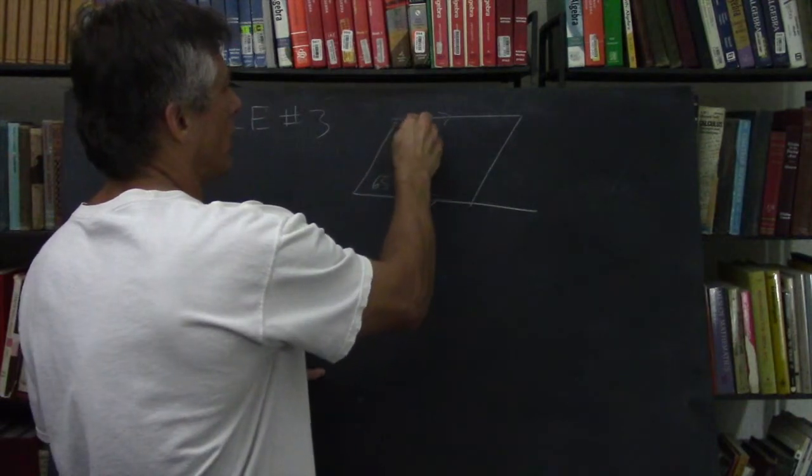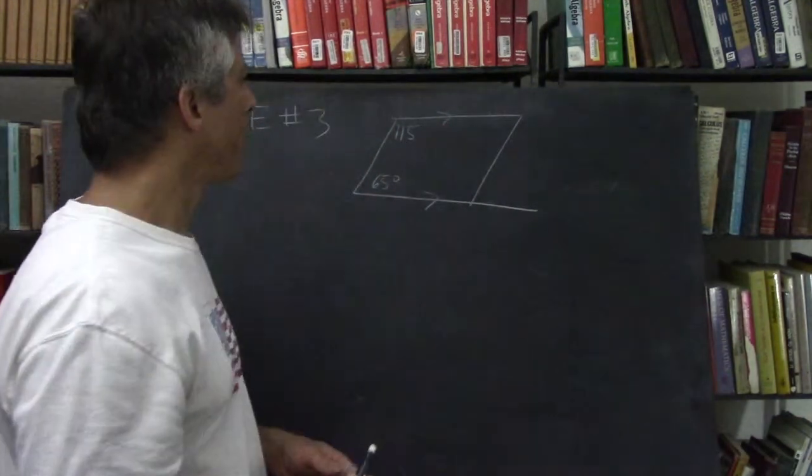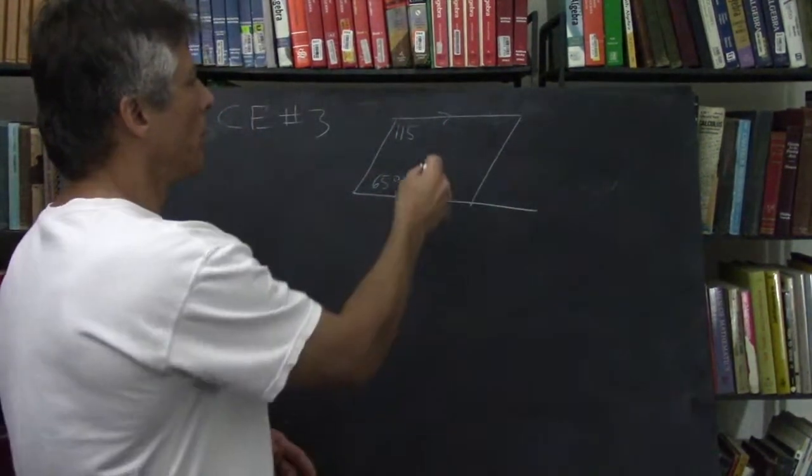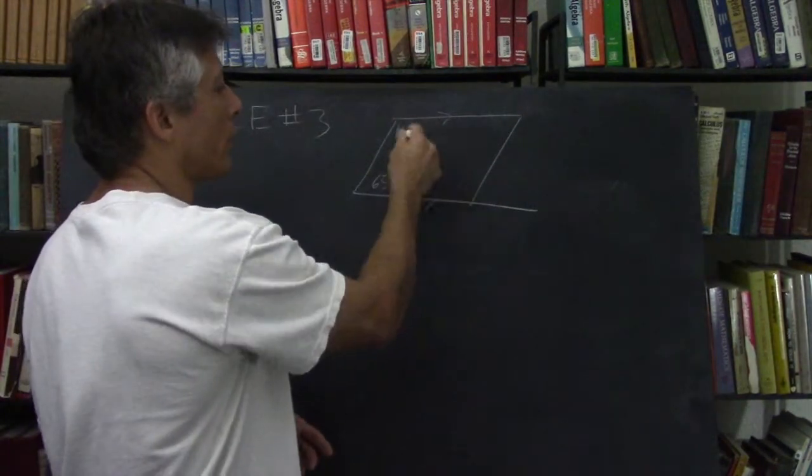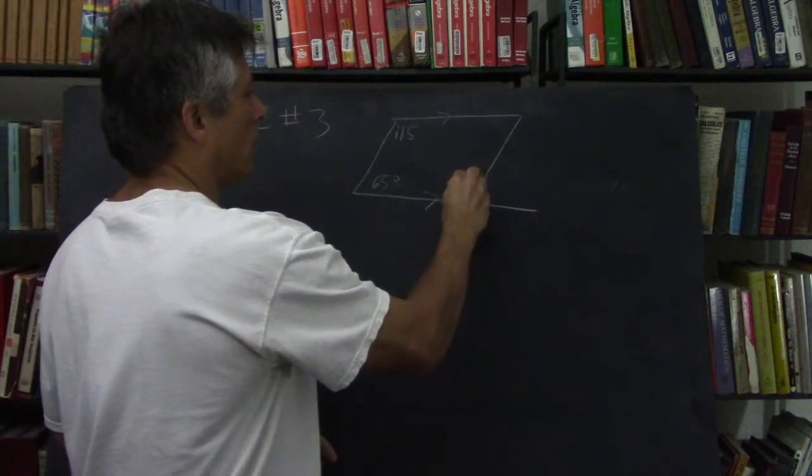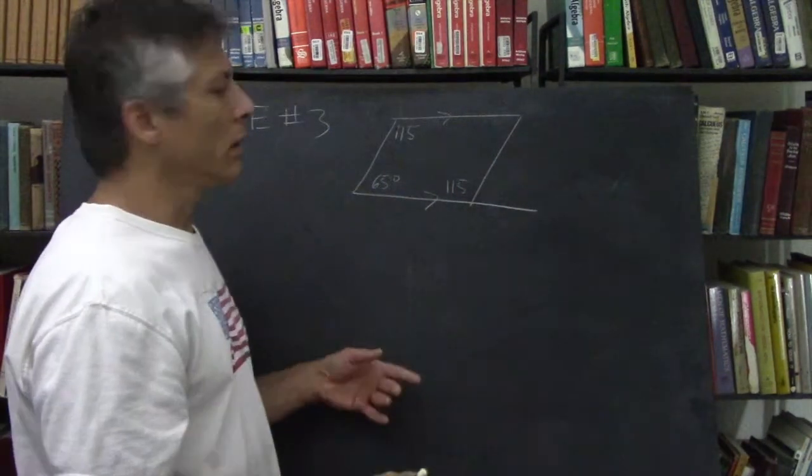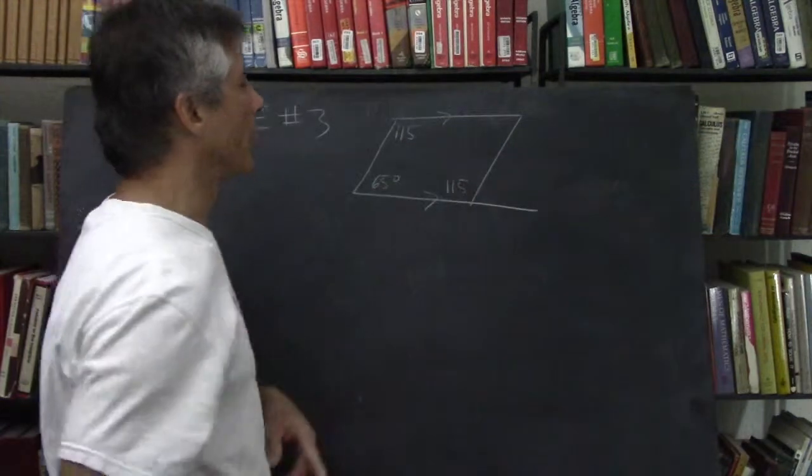So these must add to 180. So this is 115. And then by the theorem we just proved, theorem 5.2, opposite angles are congruent. So that's 115 also. And you could also know that these two must be supplementary.